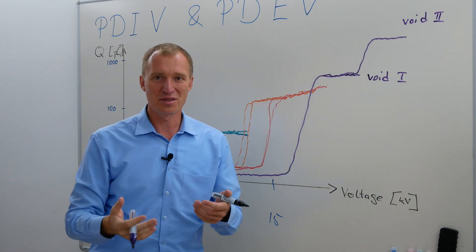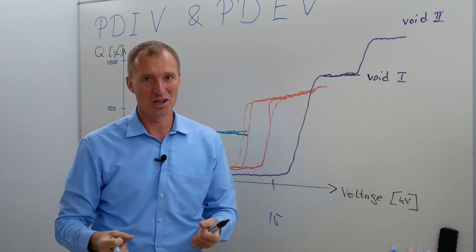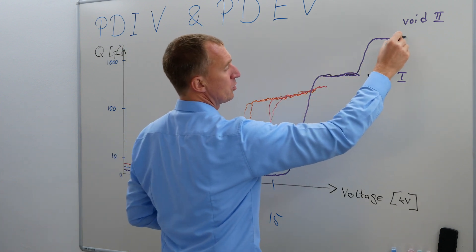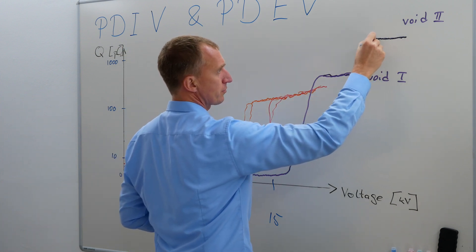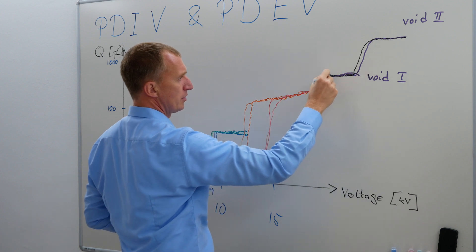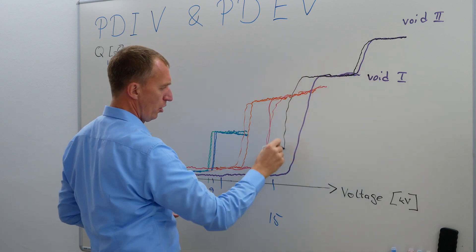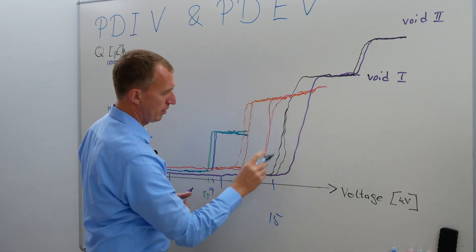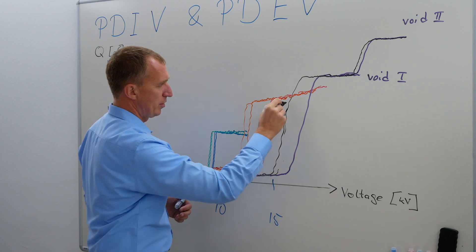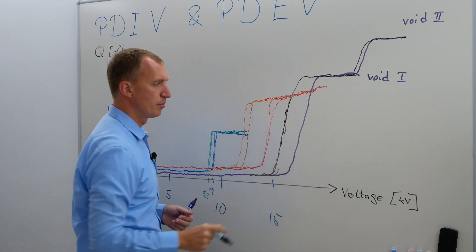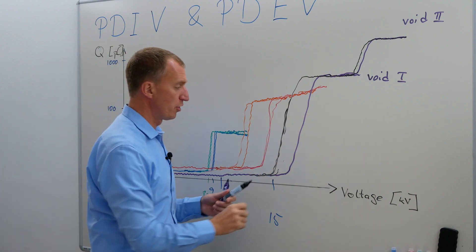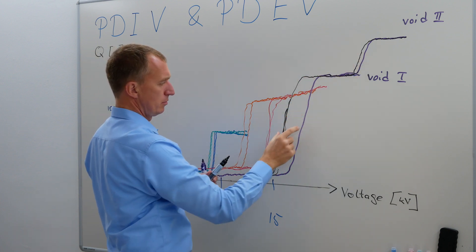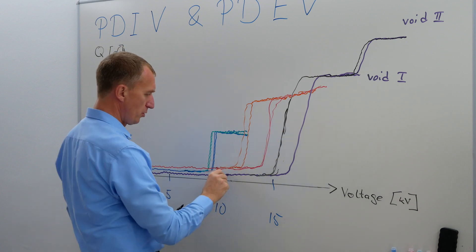We do partial discharge measurements because we often don't know what's there. When you reduce the voltage again for the void, you see a hysteresis. For void one the hysteresis is smaller, and for void two — where a second void was triggered — the hysteresis is bigger. We'll do the same measurement procedure again to properly determine inception and extinction voltages.